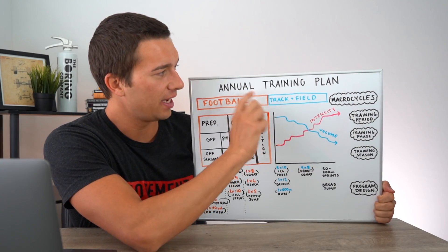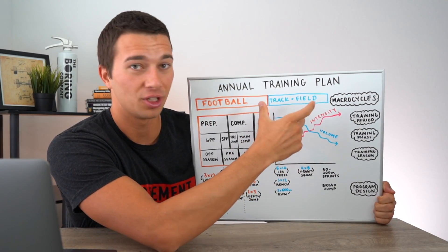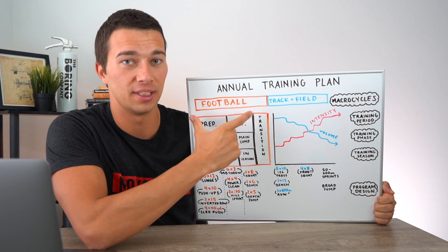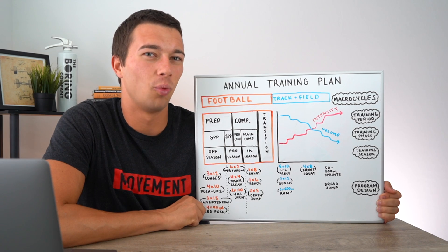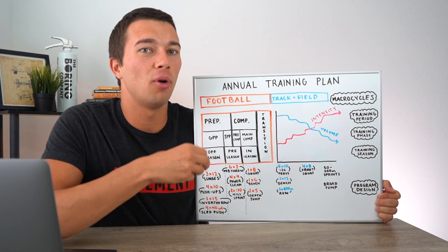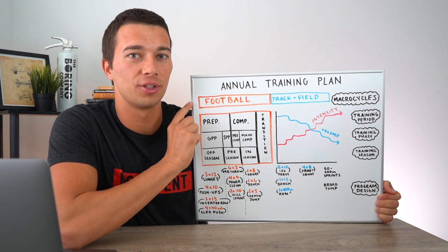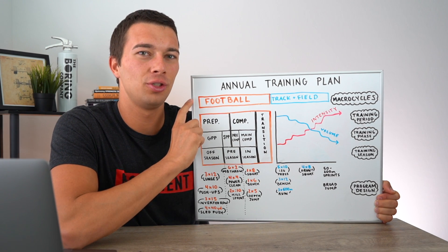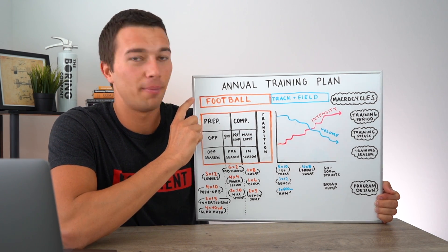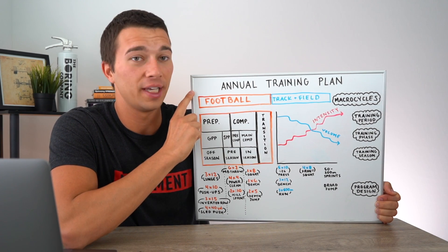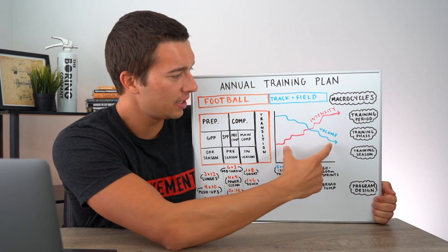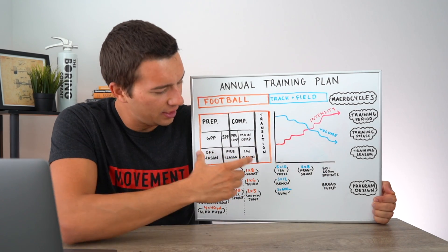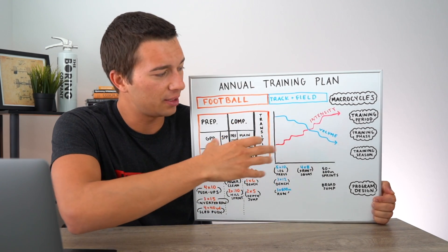In this example we have an annual training plan which is a full year broken down with two macro cycles — a track and field season and a football season. Typically our macro cycle lasts one season, and if we're doing multiple seasons in a year we would have multiple macro cycles in an annual training plan. If we're a one-sport athlete or doing one season per year, you would have a macro cycle that lasts the full annual training plan. This graph is just a representation of this chart — basically the same things — and we're going to break them down now.